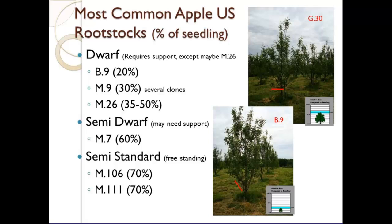Regarding espalier: our full dwarf apple orchards are almost espaliered, except they are not two-dimensional like most espalier. A high-density dwarf orchard is fully trellised and staked, but espalier is usually against a flat surface — it's two-dimensional rather than three-dimensional. So no, espalier is not common in any scale of commercial orchard, but when you go into high-density planting with trellis, you are approaching it — except it does have three-dimensionality to it. When selecting nursery stock, buy high quality. Stick to around a half-inch diameter. Go with a reliable nursery.